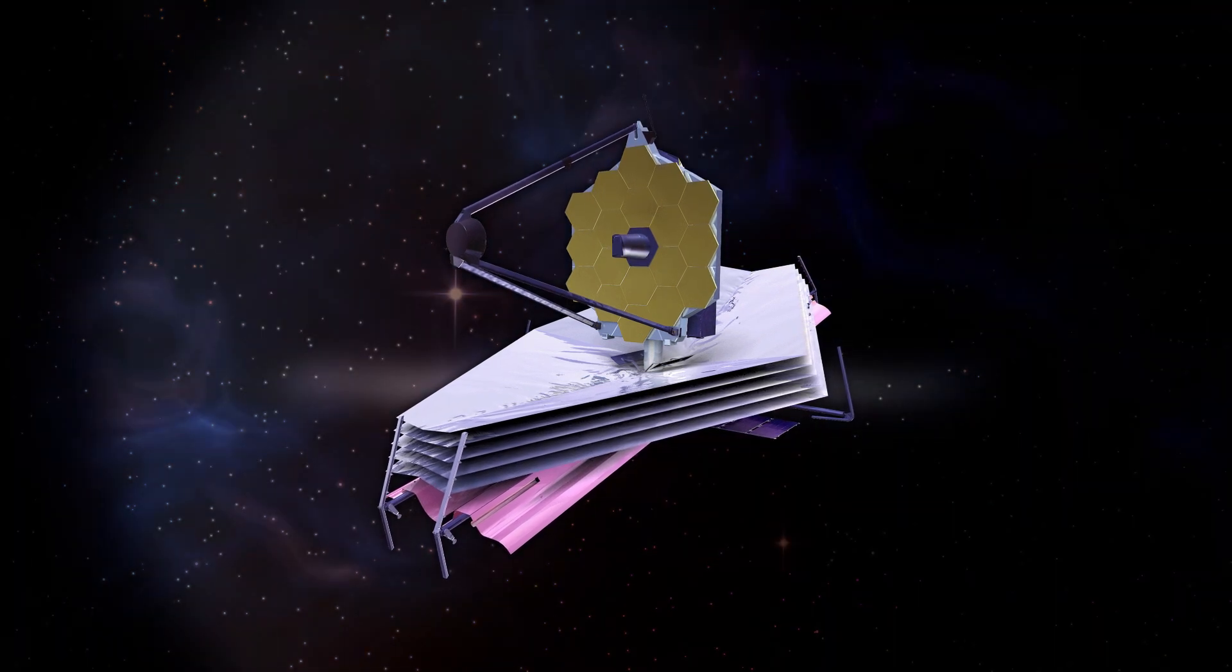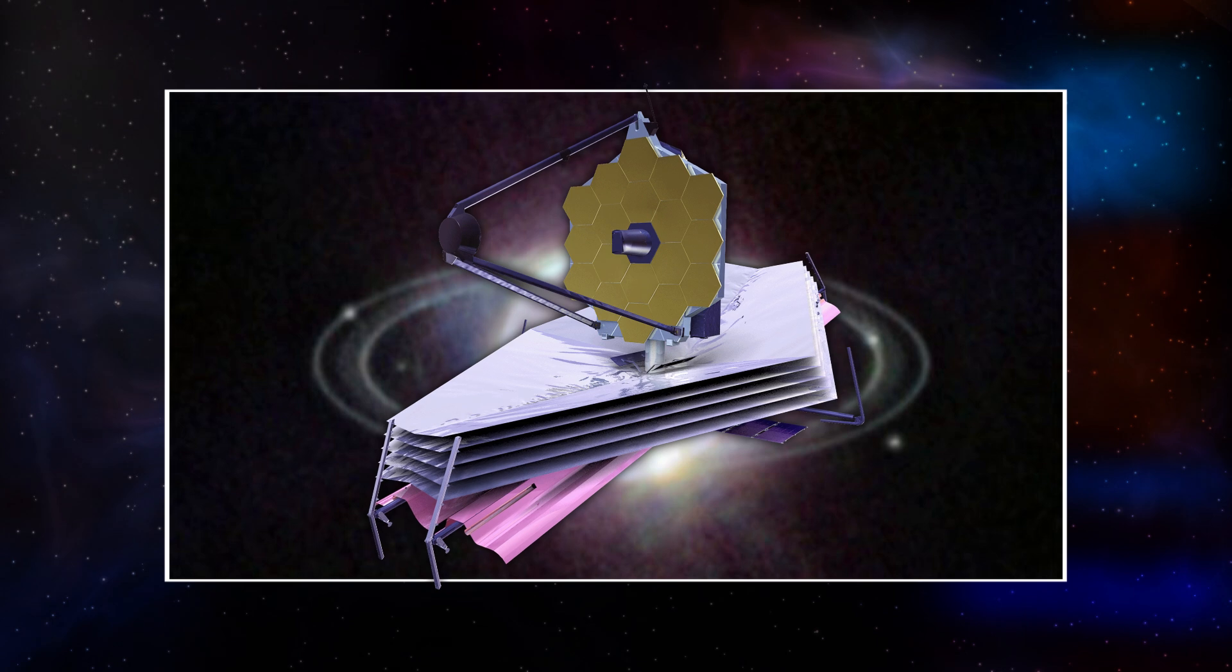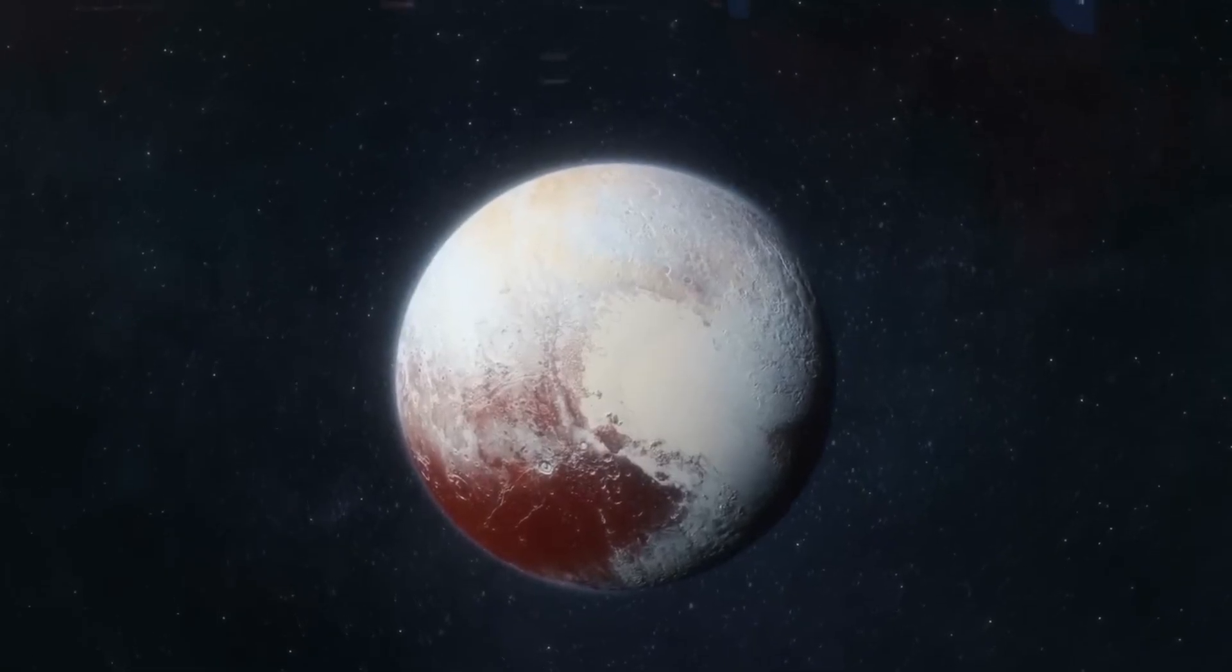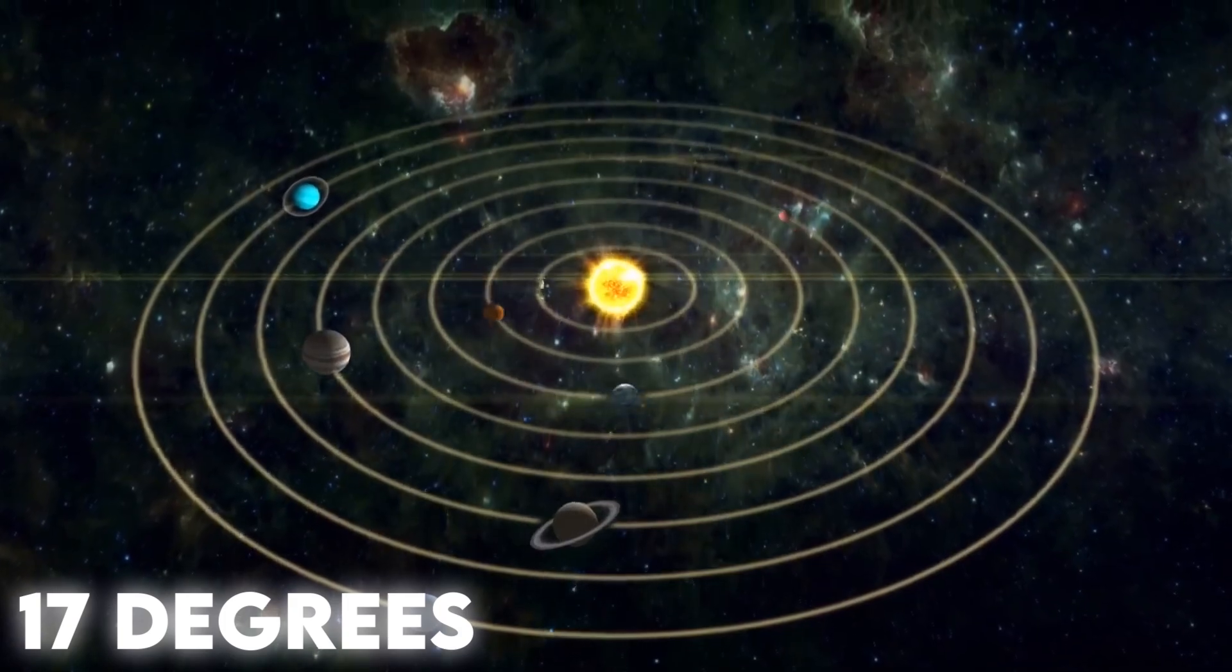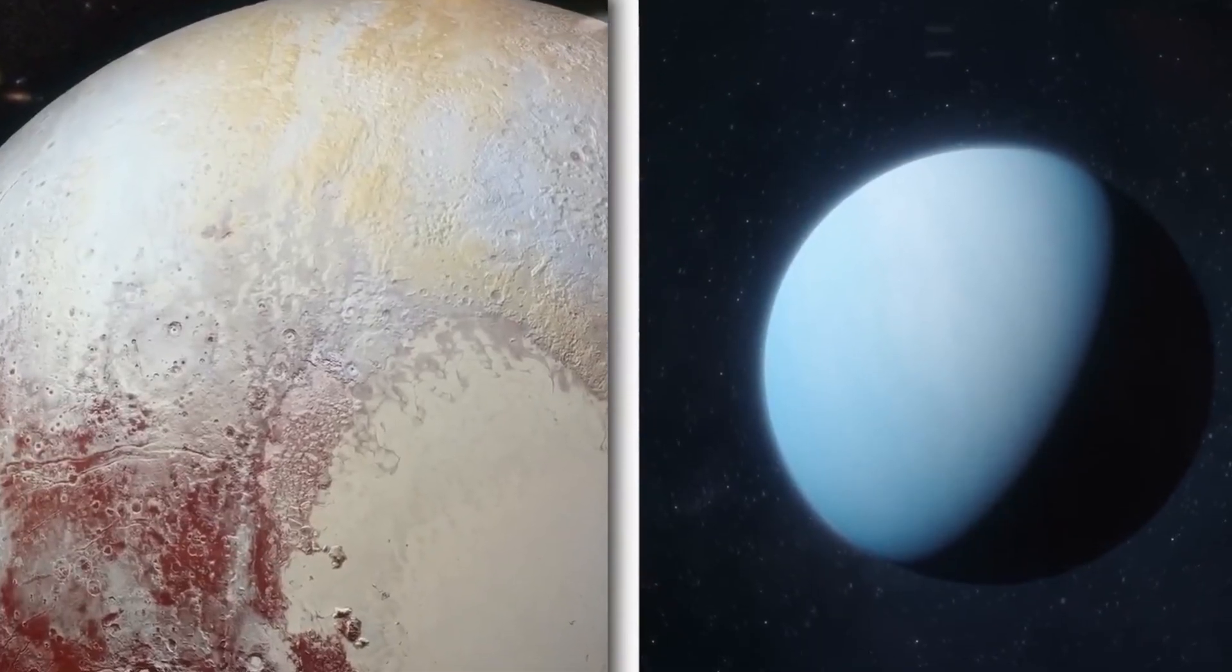The James Webb Space Telescope recently captured an unexpected event involving Pluto, the dwarf planet, with Neptune. Pluto's peculiar orbit, inclined at 17 degrees and intersecting with Neptune's path, brought the two celestial bodies together.